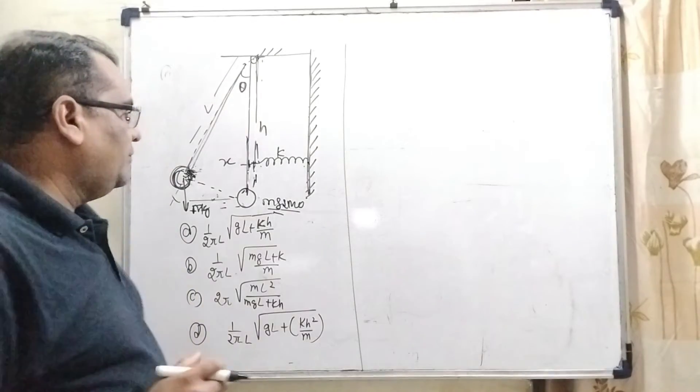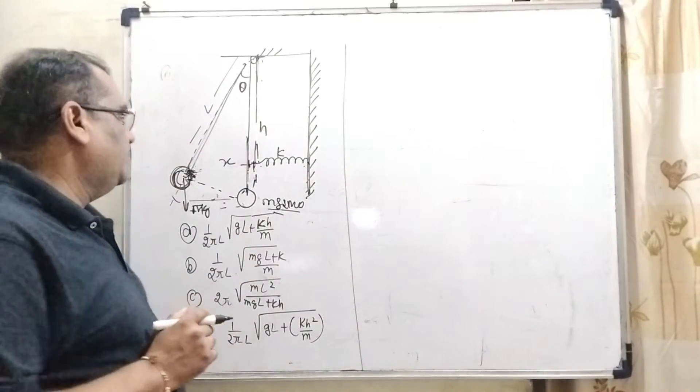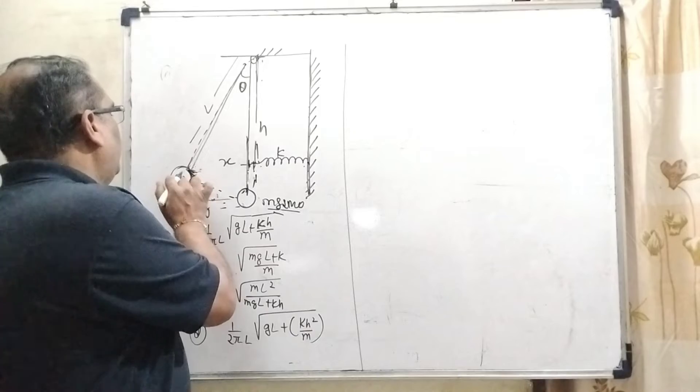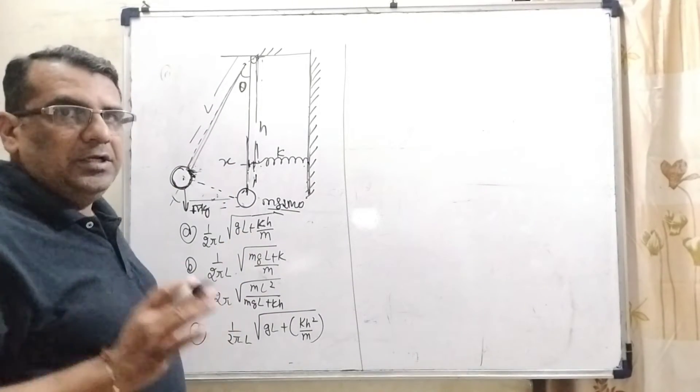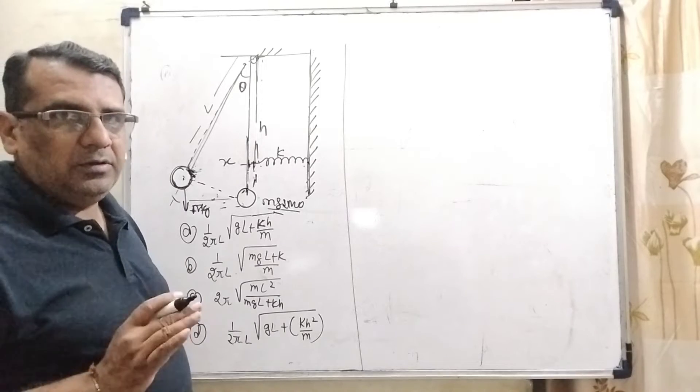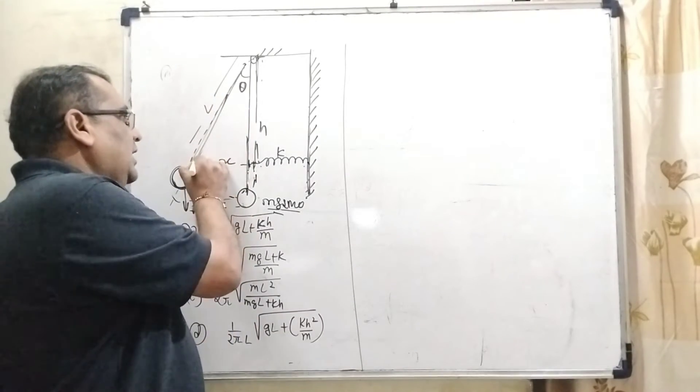Before solving the question, we have to understand what the question says. Here, we have given a pendulum which is connected with massless rod. It is very important massless rod. And its length is L.